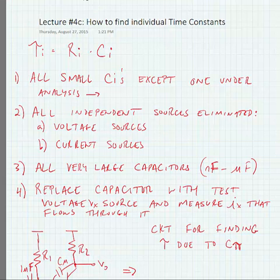Okay, so the first thing in our method is that we're going to eliminate all of the small capacitors except for the one under analysis. And this means that we're going to open circuit them. So all small capacitors in the circuit that aren't the one we're analyzing are open circuited. Hence the name open circuit time constant.